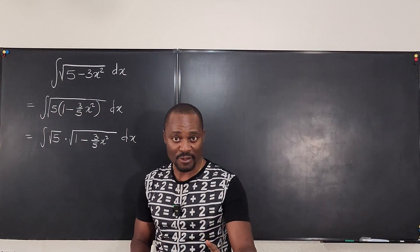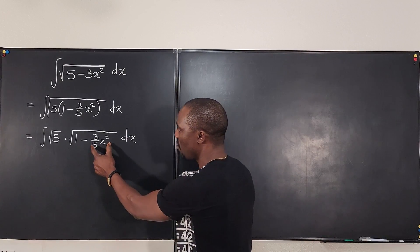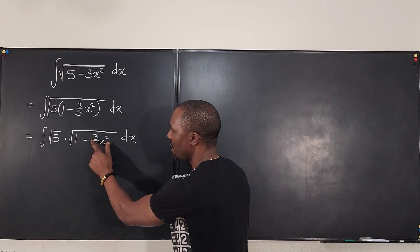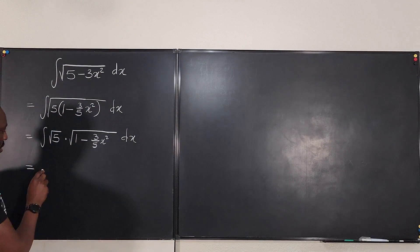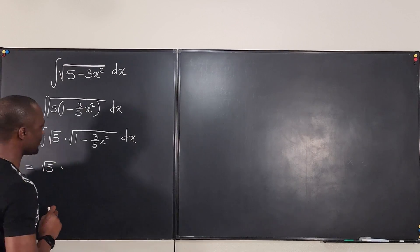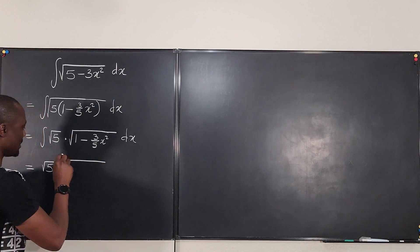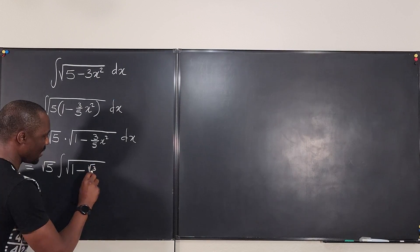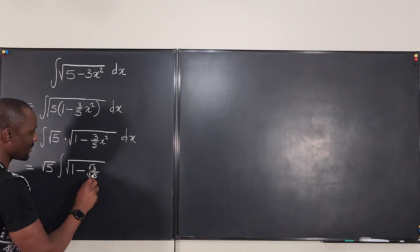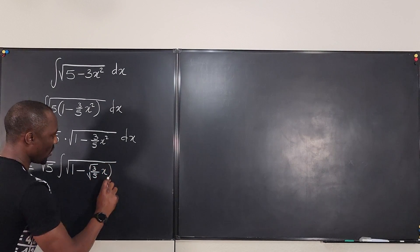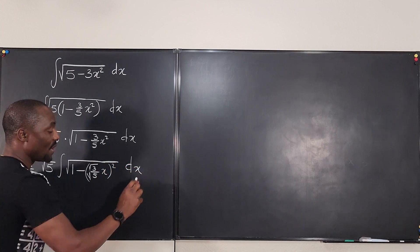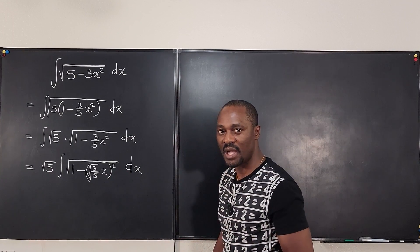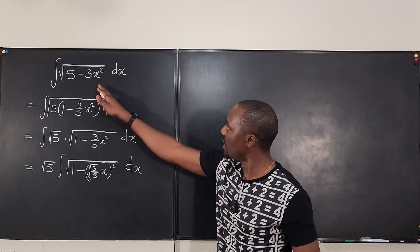Now I can rewrite this as the integral. I can pull out this 5 — it becomes the square root of 5 times the square root of 1 minus 3 over 5 x squared dx. Now I'm about to do my trig substitution, but I want this to be a square. So I can put this under a square root sign and then square it: the square root of 5 times the integral of 1 minus the square root of 3 over 5 x, all squared. This is the perfect scenario for using trig substitution, where this expression is going to be equal to sine theta.